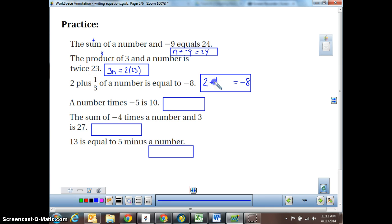2 plus 1 third n equals a negative 8. A number times a negative 5 is 10. So is 10 is my answer. A number times a negative 5. So that means a negative 5n is equal to 10.